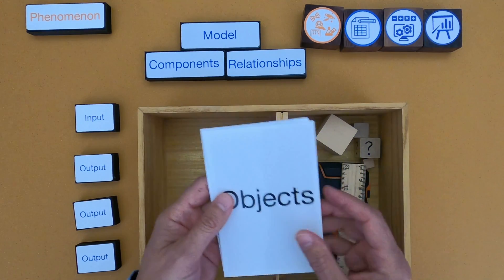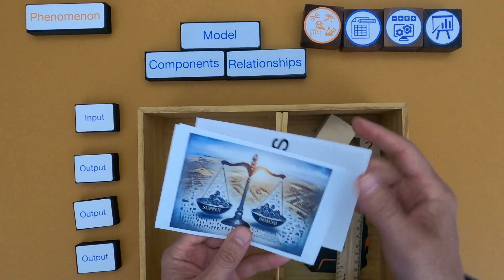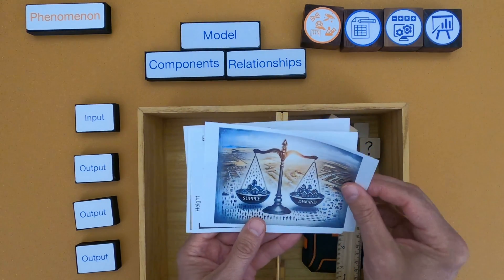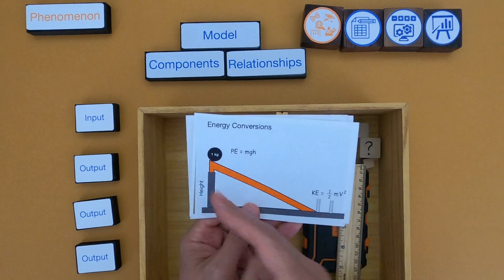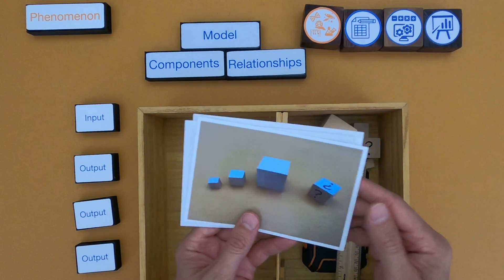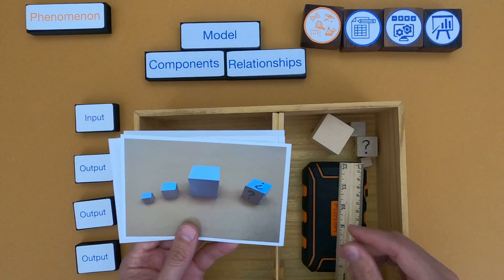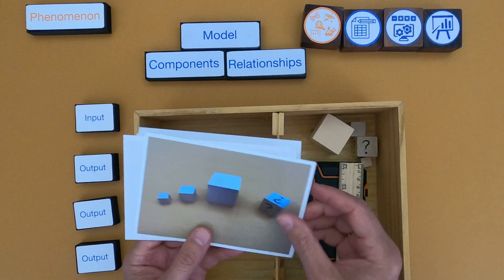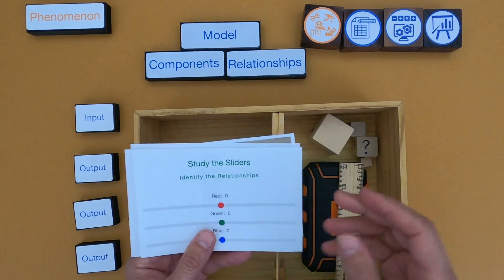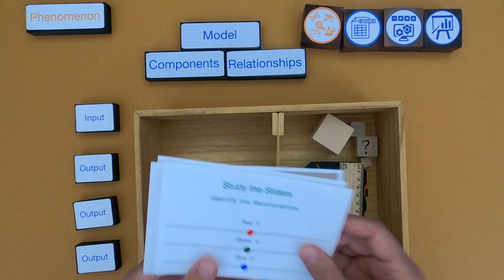After watching this video, you should be able to build computational models and simulations for something like the supply and demand curve, or energy conversion if we're looking at a sphere rolling down a plane. I'm going to start by building some simple models around these wooden cubes, and then you'll have a chance to do the same as you look at the Study the Sliders simulation.